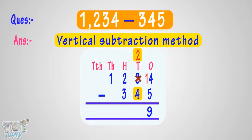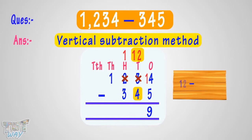We cannot subtract 4 from 2. So borrow 1 from 100's place. Cross 2, make it 1. Make 2 at 10's place as 12. 12 minus 4 equals 8. Write 8 in the difference at 10's place.